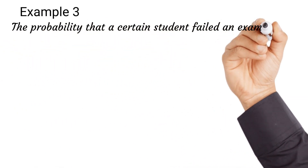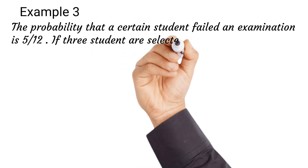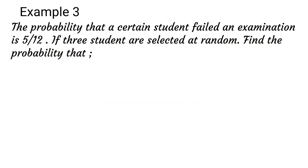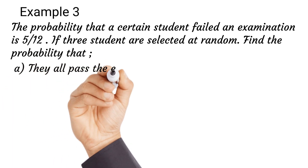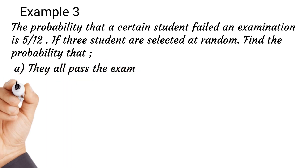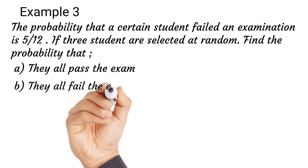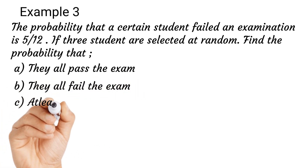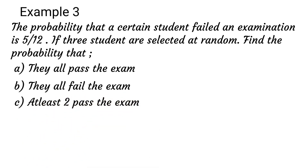Example three: the probability that a certain student failed an examination is 2 over 5. If three students are selected at random, find the probability that: they all pass the exam; they all fail the exam; at least two pass the exam.